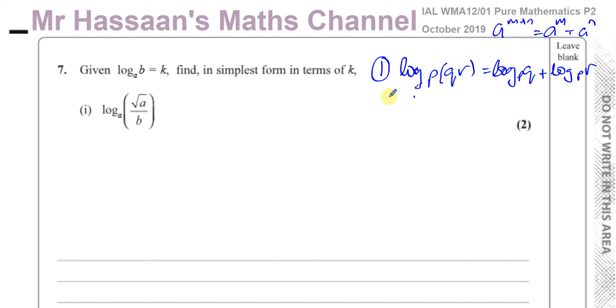And the second law is the law of division. So log to the base P of Q divided by R is going to be log to the base P of Q minus log to the base P of R.